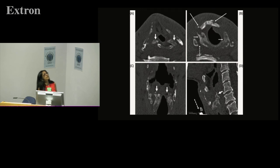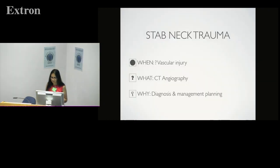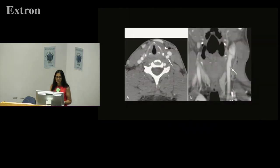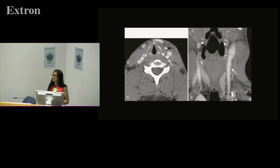When you suspect vascular injury to the neck, you should request CT angiography to decide management plans. As I said, we're doing everything with CT these days. Here you can see a dissection of the internal carotid artery on CT angiography — it's just a different phase of contrast when we start the imaging.